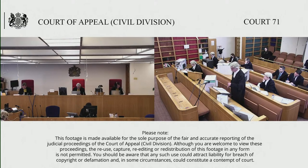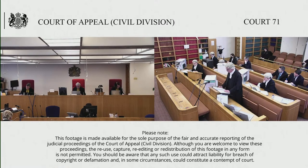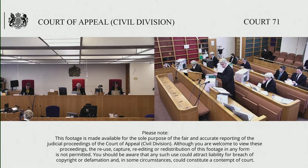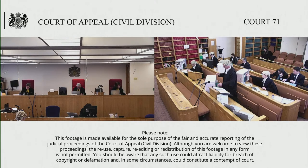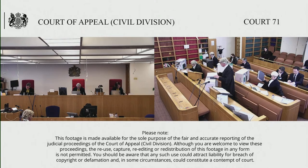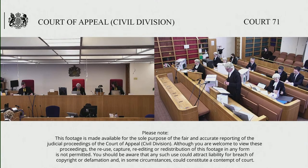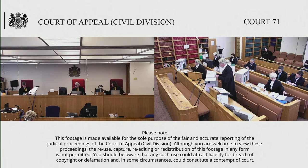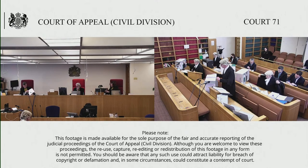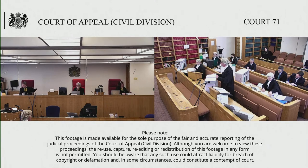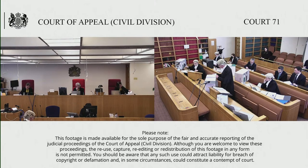Moving on to my opening overview of seven key points of principle. The first key point is that by Section 1 of the State Immunity Act, the Republic is immune from the jurisdiction of this court, except as provided in the exceptions. So it may assist to have the Act open, which is in the authorities bundle, tab 1, page 1. Section 1(1): a State is immune from the jurisdiction of the courts of the United Kingdom, except as provided in the following parts of this Act. That is broadly in relation to the adjudicative jurisdiction of this court.